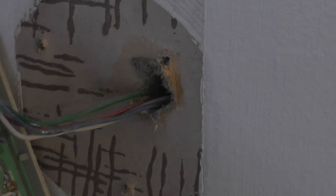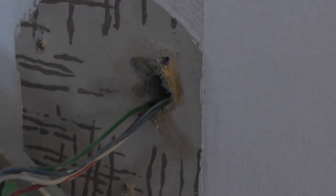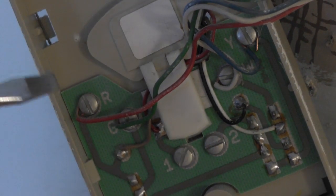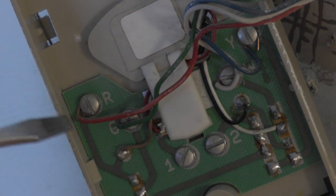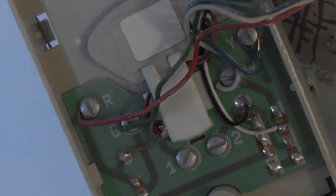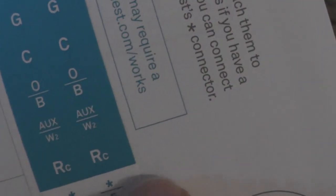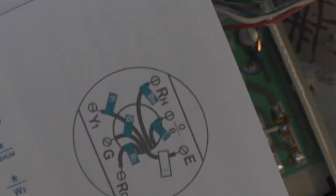Alright, so what you want to do is label these. We have an R, G, and a Y and W. So we're going to peel these off and stick them on those wires.